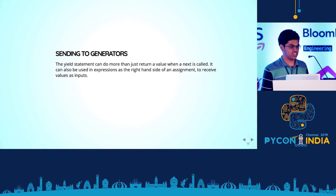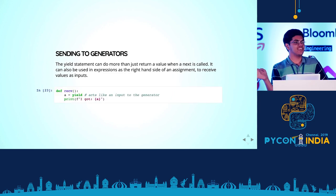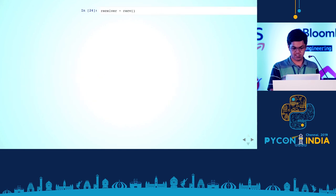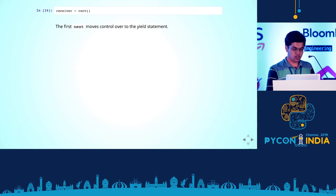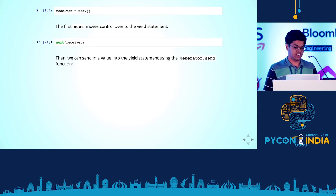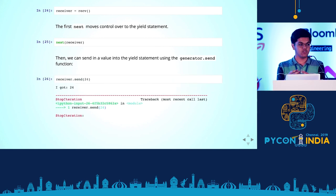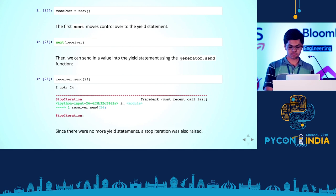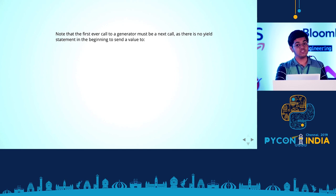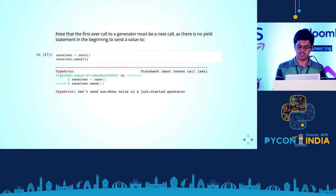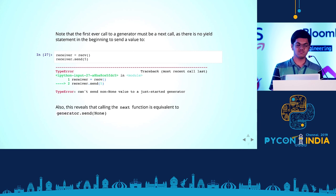So far we've seen generators generating stuff, but you can actually send stuff back into generators using that same yield keyword — you put it on the right-hand side of an assignment, like `a = yield`. To see how this works: you get your receiver generator, call next on it first to move to the yield statement, then use generator.send() to send a value — for example, send 24, and it prints 'I: 24' because whatever you send is put into the variable a. It also raised StopIteration because there were no more yields after that. You have to call next before you can send anything; if you try to send before calling next, Python will complain that you can't send a non-None value.